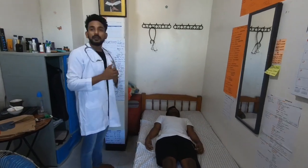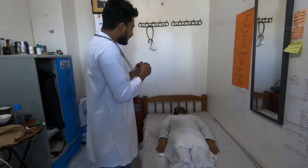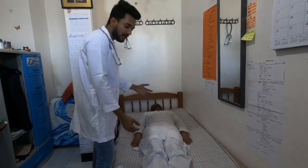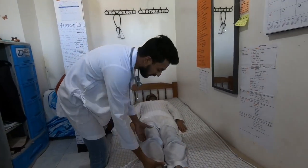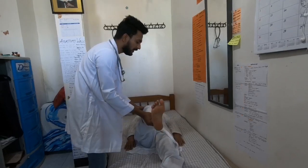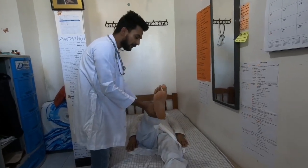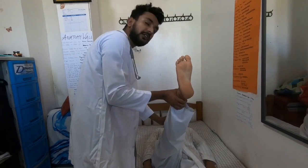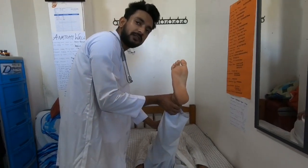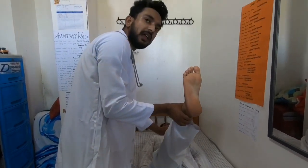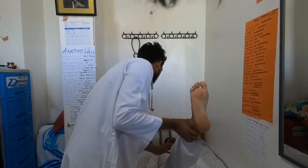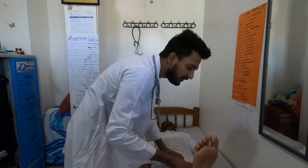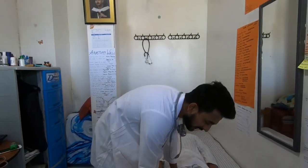Now we will move to the Kernig sign. In this test, we make the patient again in a supine position and I am going to flex the knee and the hip joint to 90 degrees and dorsiflex the leg. After dorsiflexion of the leg, it will cause pain in the supine position. Do you have pain at the back? Of course. That means it is a positive Kernig sign.